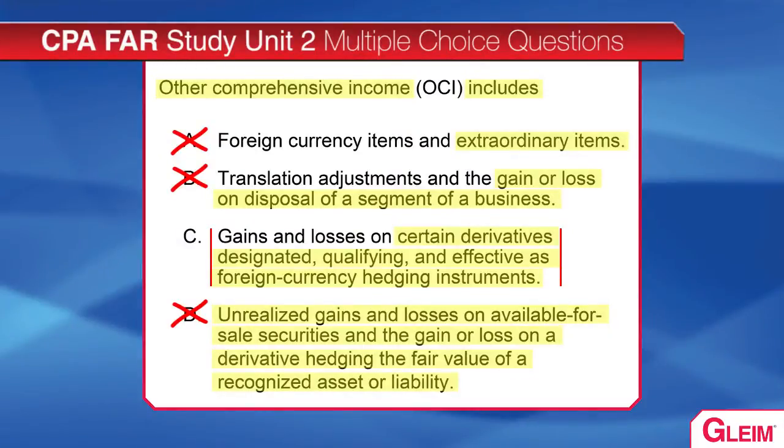OCI also includes the gain or loss on a hedging derivative or non-derivative in a hedge of a net investment in a foreign operation, treated as a translation adjustment, and translation adjustments themselves. If you didn't know all of that, it's time to go back and review the material. The final answer is C.